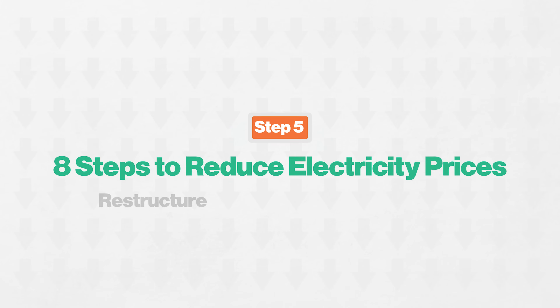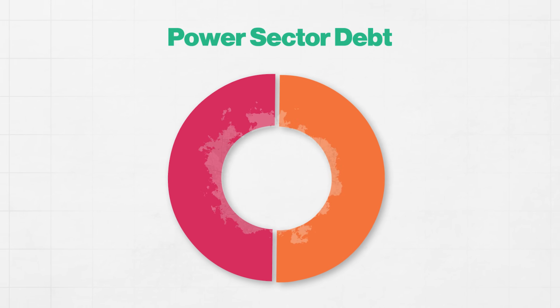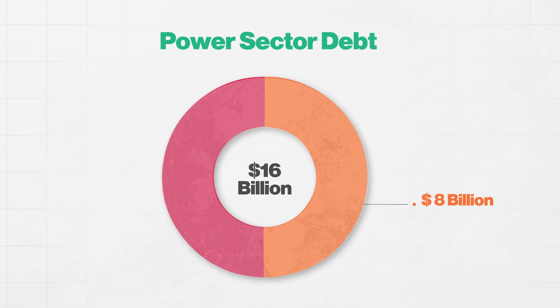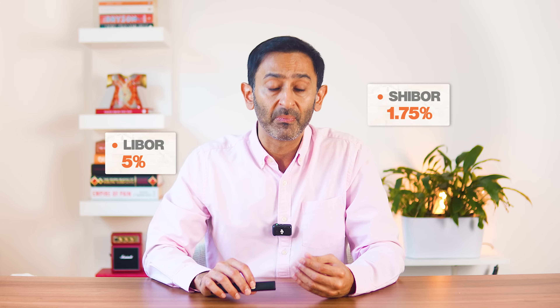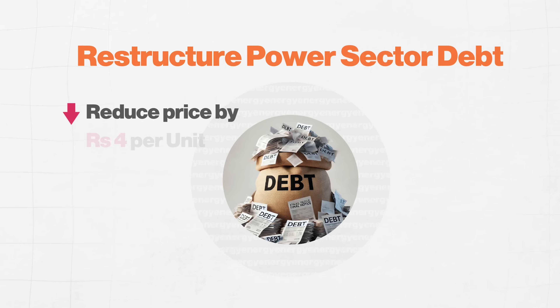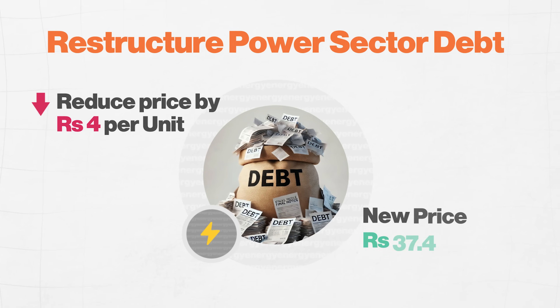Number five: restructuring of CPEC and government debt. The government's total power sector debt is $16 billion — $8 billion for nuclear plants and $8 billion for CPEC plants. Currently, this debt is priced from the London Interbank Offer Rate (LIBOR). We should switch this to SHIBOR — the Shanghai-based interest rate — or yen-based financing, whose base rate is 1.75%. If we extend the total debt maturity by 5 years, the saving would be Rs.4 per unit. The new price would be Rs.37.40 per unit.